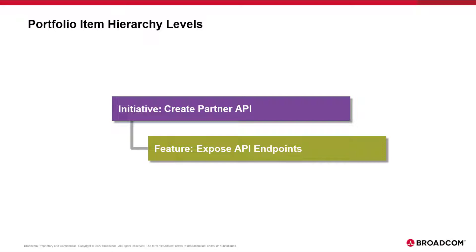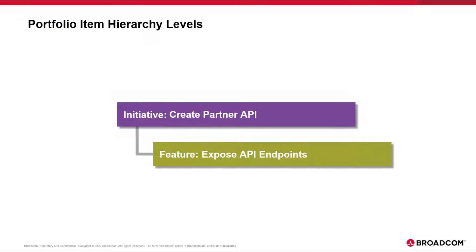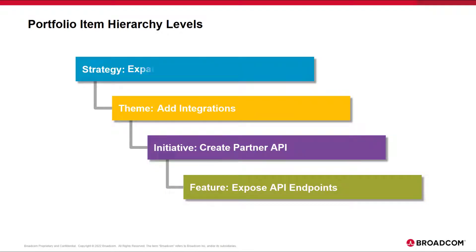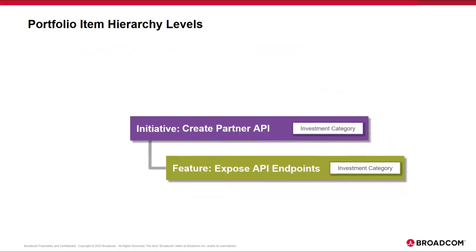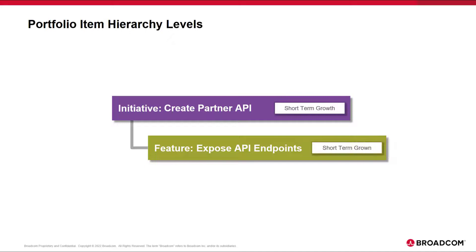Some organizations only want or need to use the lowest two levels in the portfolio hierarchy because they invest at the initiative level and deliver at the feature level. The strategy and theme levels are likely more important to stakeholders at the upper levels of your organization. If they're using Rally as a portfolio management tool, then you want to keep those levels and model them, but focus your planning and execution work using the lowest two levels, and then connect your investments, which might be your initiatives, to a theme for the benefit of other stakeholders. Additionally, there's a portfolio item attribute called investment category that can be used in conjunction with any portfolio item type. If there's no need to roll up reporting to the higher levels of the portfolio hierarchy, you can remove those levels and then use the investment category to categorize your portfolio items.